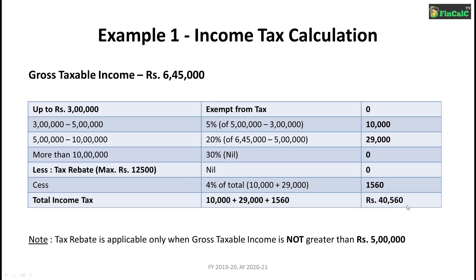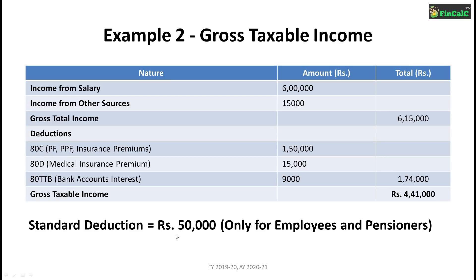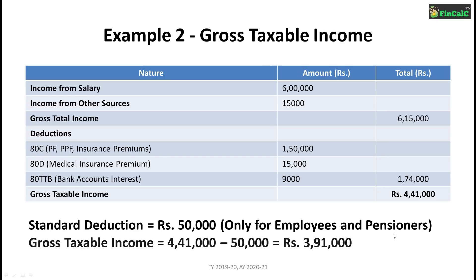Let us now see another example for the financial year 2019-20 for people of age between 60 years to 79 years. In this example, income from salary is Rs 6,00,000 and income from other sources is Rs 15,000, making your gross total income Rs 6,15,000. Total deductions are Rs 1,50,000 under Section 80C, Rs 15,000 under Section 80D, and Rs 9,000 under Section 80TTB, totalling Rs 1,74,000. This makes your gross taxable income Rs 6,15,000 minus Rs 1,74,000, equal to Rs 4,41,000. A standard deduction of Rs 50,000 applies, bringing your gross taxable income to Rs 3,91,000.